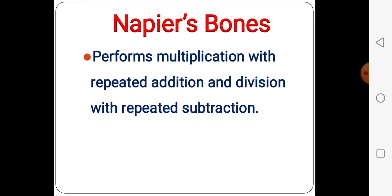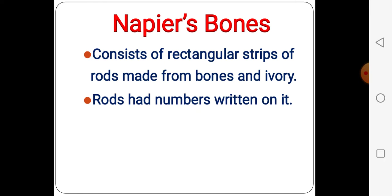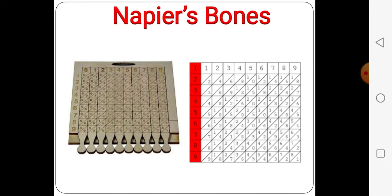In Napier's bones we can do only multiplication and division — no addition, no subtraction. It's a one type of pre-case in math. Napier's bones consists of rectangular strips of rods made from bones and ivory. The rods have numbers written on them. Let's see the picture of Napier's bones.